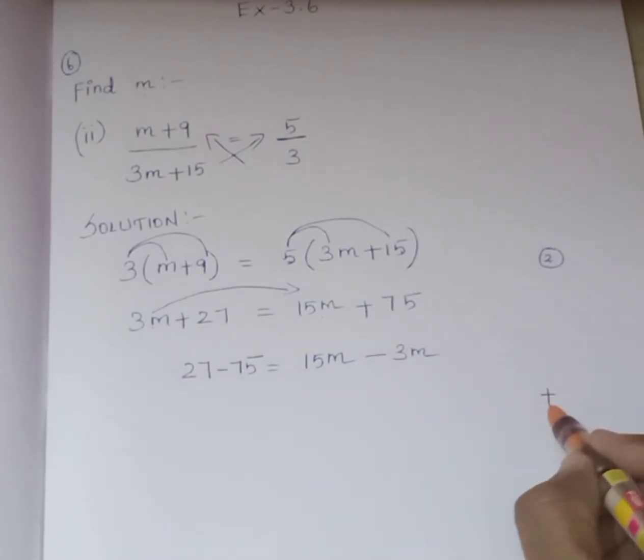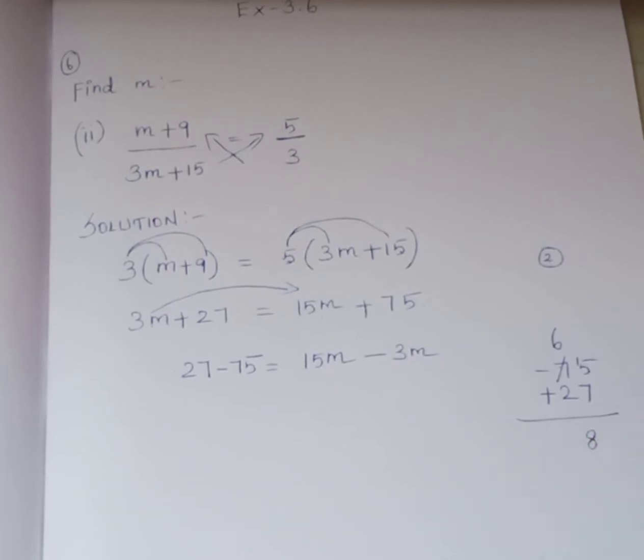Now, 27 minus 75. What will happen? Yes, different signs means we have to subtract. So I am going to borrow. If you take 1 from here, it will become 6 and this will become 17. 17 minus 5 is 12, wait, let me recalculate. It will become 6 and 15. 15 minus 7 is 8.